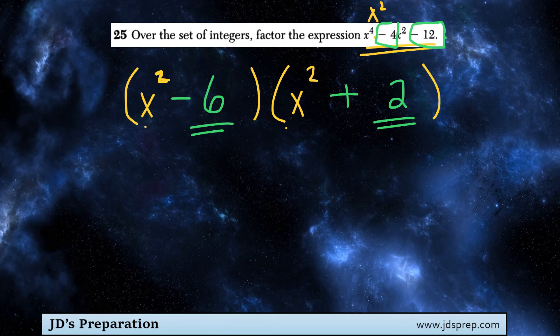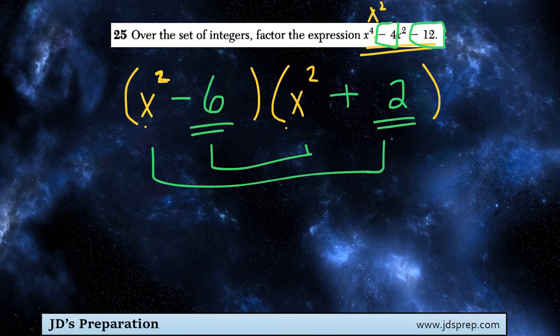So, if we're thinking backwards here, if we expanded this, negative 6x squared plus 2x squared would give us negative 4x squared. So, that checks out.